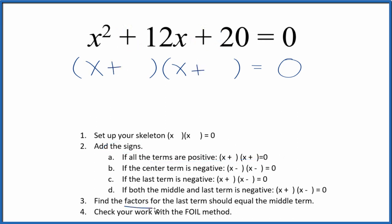Once we've done that, we can find the factors for the last term. That's the 20, and those factors should add up to the middle term. So the factors for 20 are, and as I look at them, I can see 2 times 10, that gives me 20. 2 plus 10, that gives me 12. So I'll put a 2 here and a 10 here, and we're done.